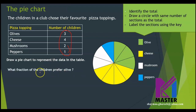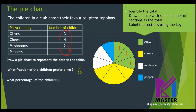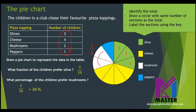Let's see what fraction of the children prefer olive. The olive has 3 parts, so it's 3 out of 10, which means 3 over 10. What percentage of the children prefer mushrooms? First, what fraction prefer mushroom? It's 2 over 10. If I want to change this fraction into a percentage, it will be 20%. So 20% of the children prefer mushrooms.